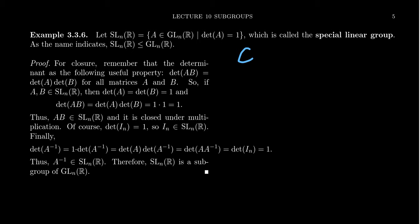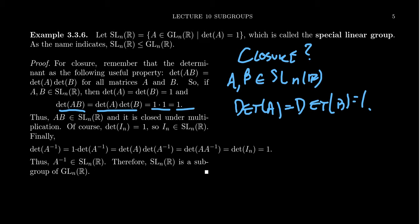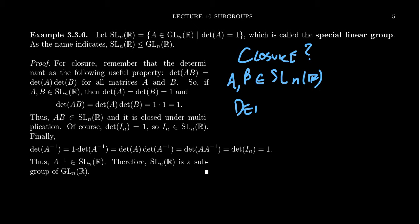We have to check three things. First, is SL_n(R) closed? If we take two matrices A and B belonging to SL_n(R), that means the determinant of A equals the determinant of B, which both equal 1. When we calculate the determinant of their product A times B, by properties of the determinant it factors as det(A) times det(B), which gives 1 times 1, which is 1. Therefore the product A times B belongs to SL_n(R), so the special linear group is closed under multiplication.